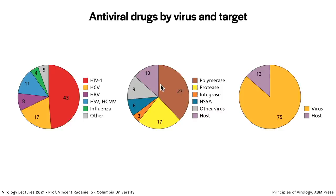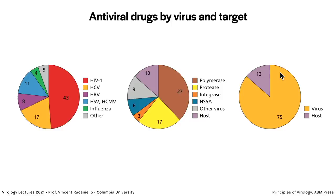When you look at the target, the polymerase is the biggest target whether it's a DNA or RNA virus — we have 27 antivirals targeting the polymerase. Then protease is next, and there are other targets like integrase and NS5A of hepatitis C. There are also 10 drugs targeting host targets. The pie chart shows 75 antivirals against viral targets and 13 against the host. The host is a small category because it's hard to find a host target that won't compromise the host when inhibited.